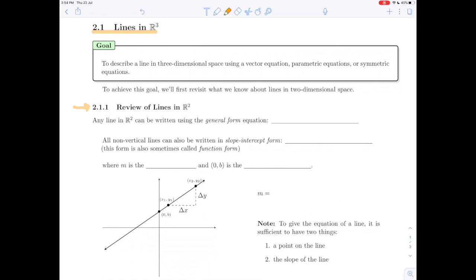The goal of section 2.1 is to be able to describe a line in three-dimensional space using either a vector equation, parametric equations, or symmetric equations. To achieve this goal, we're first going to review what we know about lines in two-dimensional space, in R2.